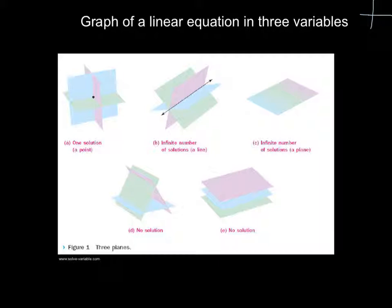If the planes intersect in a line, they have an infinite number of solutions — you probably remember this from systems of linear equations in two variables, where intersecting in a line also gave infinite solutions. This remains the same for three variables. We can also have infinite solutions if all three linear equations graph as the same plane, similar to two equations sharing the same line. They can have no solution if there are no intersections.